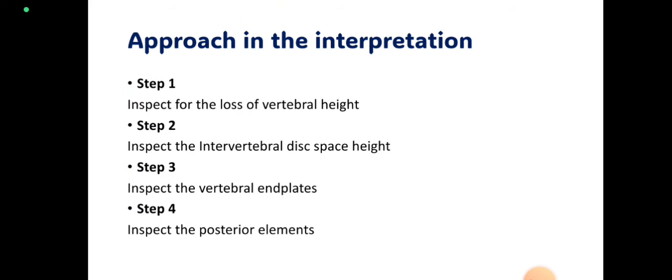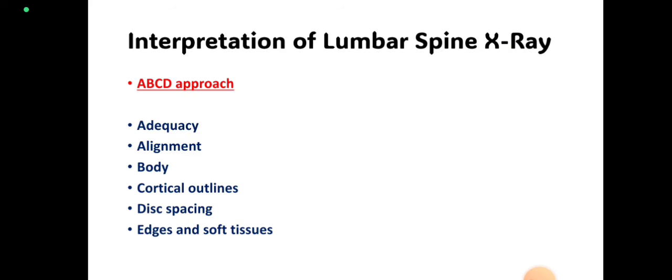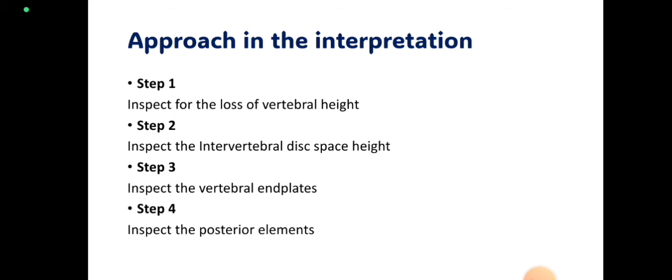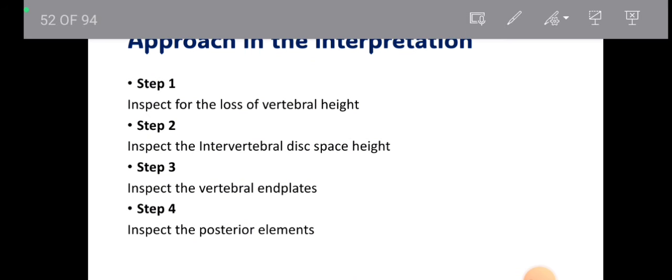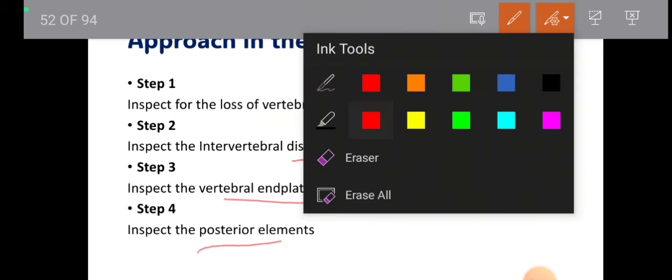Now let's talk about the interpretation of the lumbar spine x-ray. We can use an ABCD approach: Alignment, Body cortical outlines, Disc spacing and edges, and soft tissues. All lumbar vertebrae should be present in the lumbar spine x-ray with no one missing. The shadow of the film should be adequate, clearly visible, easily differentiating between vertebrae. The interpretation approach: step one — inspect for loss of vertebral height; step two — inspect intervertebral disc space height; step three — inspect vertebral end plates; step four — inspect posterior elements.